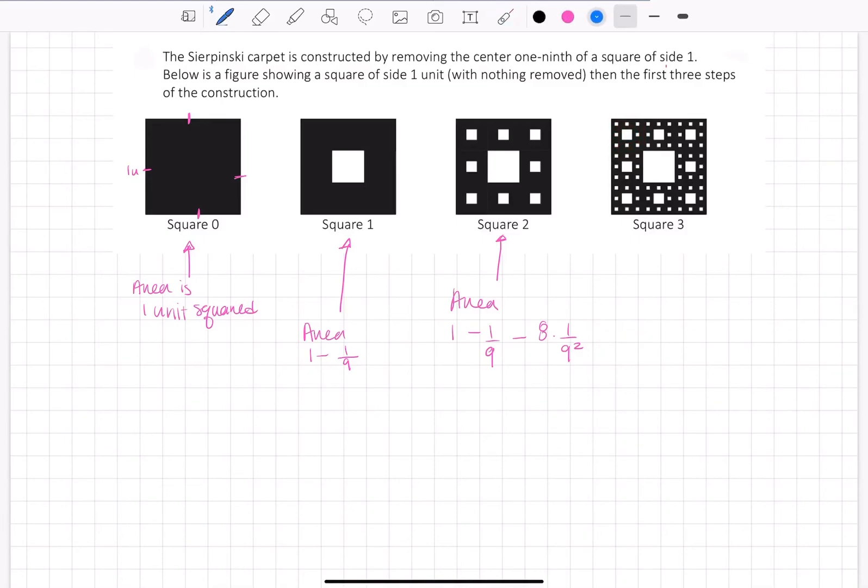And then this is where your series comes in, because what you end up with is one minus one over nine plus eight times one over nine squared plus, and I'll leave the rest of this. So I didn't actually do square three for you. Please figure that one out. And then you'll end up with something of a form one minus the sum from n equals one to infinity of your series. And that's purposely a squiggly line so that you can figure out the rest of that. Hopefully this really helps you out in finishing up this problem.